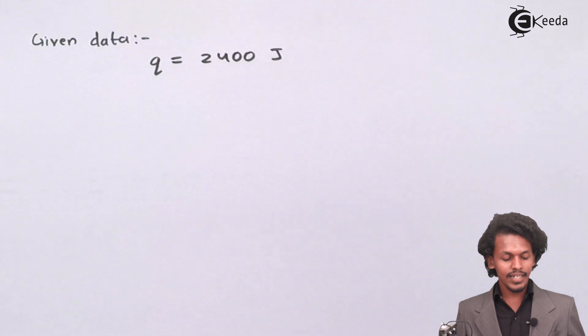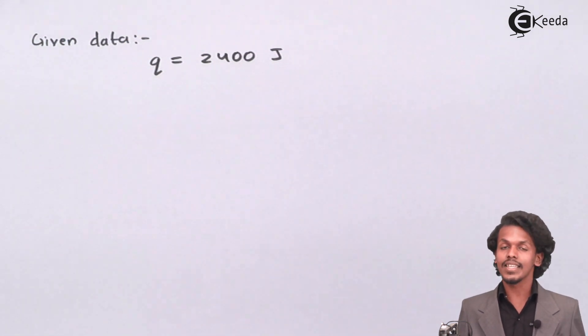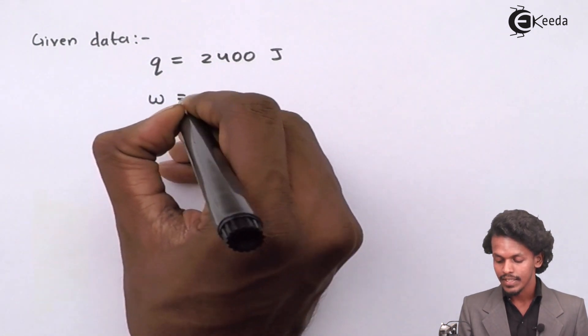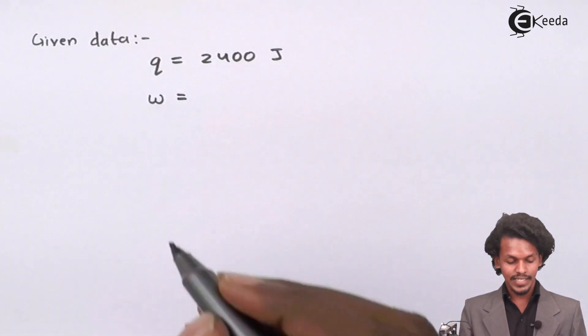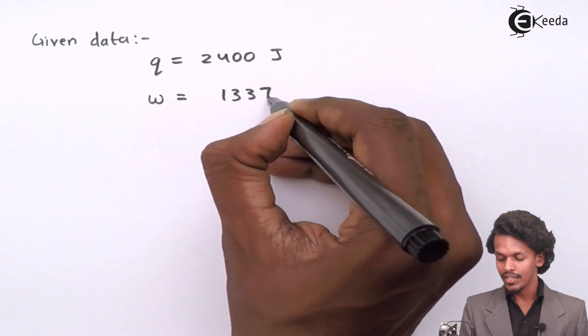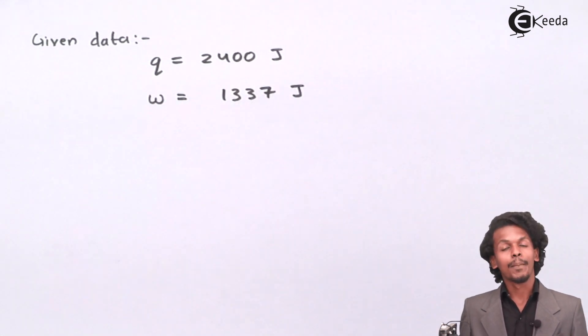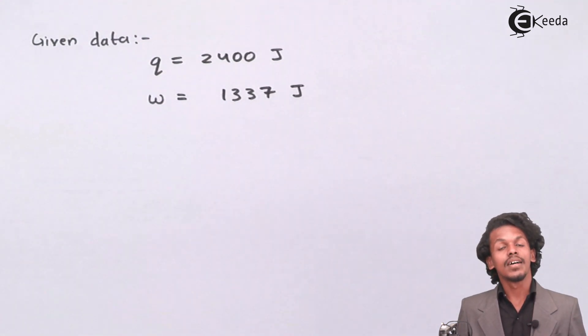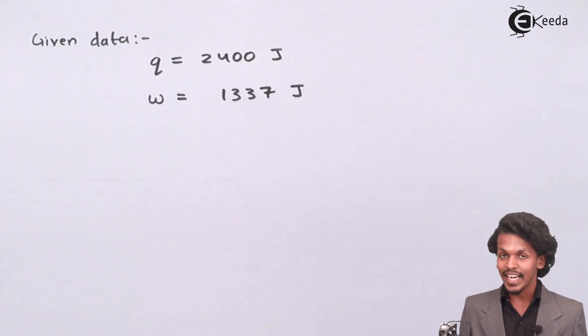Now they are saying that the work done is found to be 1337 joules. When work is done, the system acts on the surroundings. The work mentioned is 1337 joules.